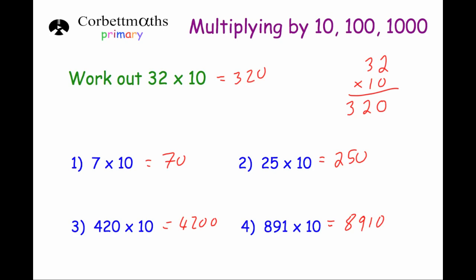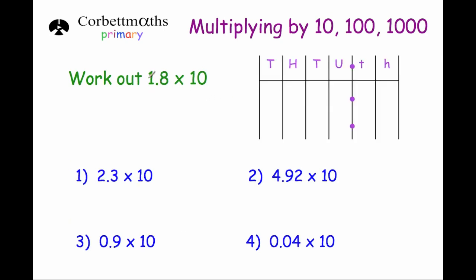Now let's look at multiplying decimal numbers by 10. If we multiply 1.8 by 10, we use place value columns: thousands, hundreds, tens, units, tenths, and hundredths. When you multiply by 10, each digit gets 10 times larger. So the 1 will move across to become 10, and the eight tenths will move one column to the left to become eight units. So 1.8 multiplied by 10 gives the answer 18.